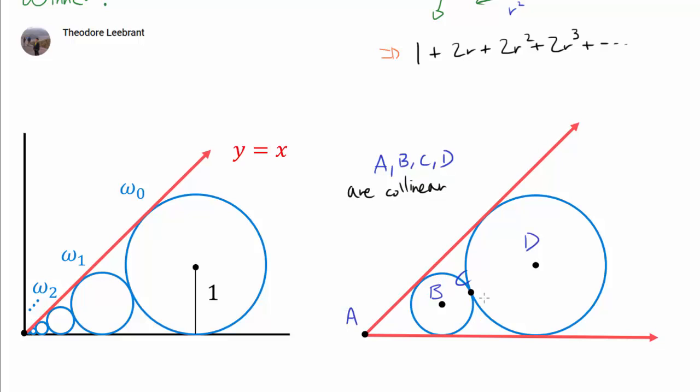So in this diagram, we have 2 circles with their external tangents intersecting at point A. Let us let B and D be the centers of the circles, and C be their point of tangency. We will prove that A, B, C and D are collinear, or they lie on the same line.